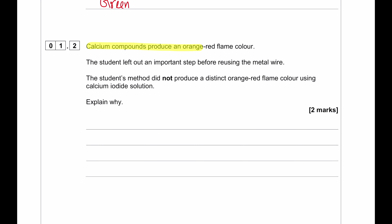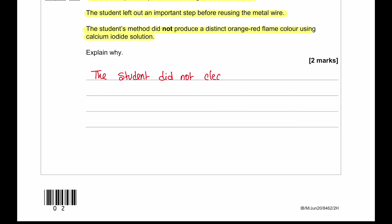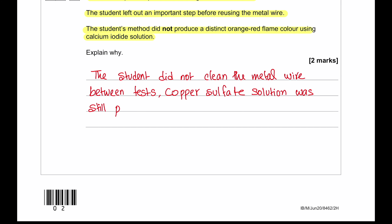Calcium compounds produce an orange-red flame color. The student left out an important step before reusing the metal wire. The student's method did not produce a distinctly orange-red flame color using the calcium iodide solution. The student did not clean the metal wire between tests, and as a result copper sulfate solution was still present on the metal wire, so the color produced was mixed and blended.